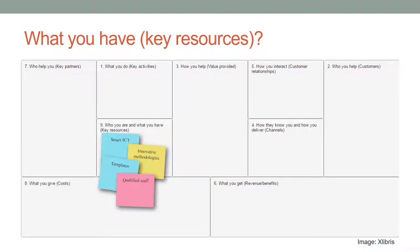What key resources we have are explained in the Key Resources segment. These are the resources needed to deliver what we promise. It includes existing personal and professional qualifications, tools, equipment, and qualified personnel. Within ExLibris, qualified staff from partner institutions, smart ICT, and templates are some examples of key resources.